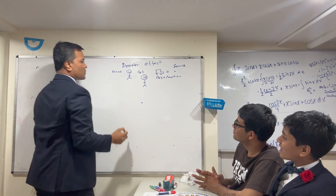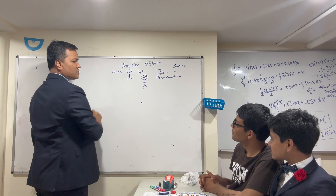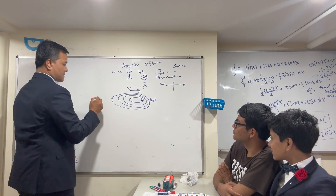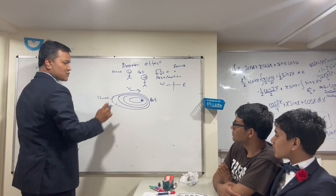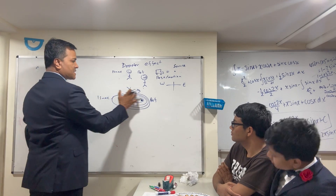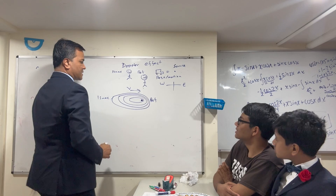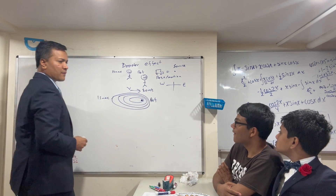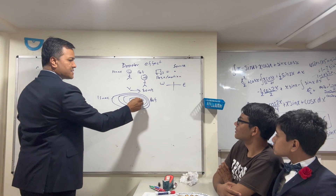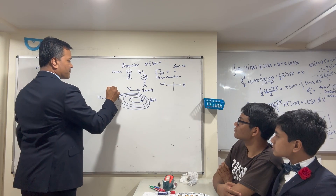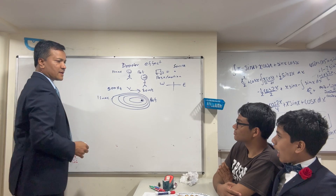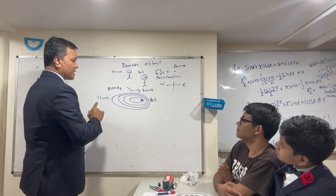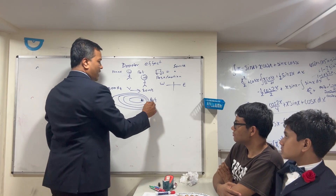So we have the source, observer one, and observer two. Pay attention — this is Raf and this is Isaac. The object is moving to the right at 30 meters per second. The driver is honking at 500 hertz.